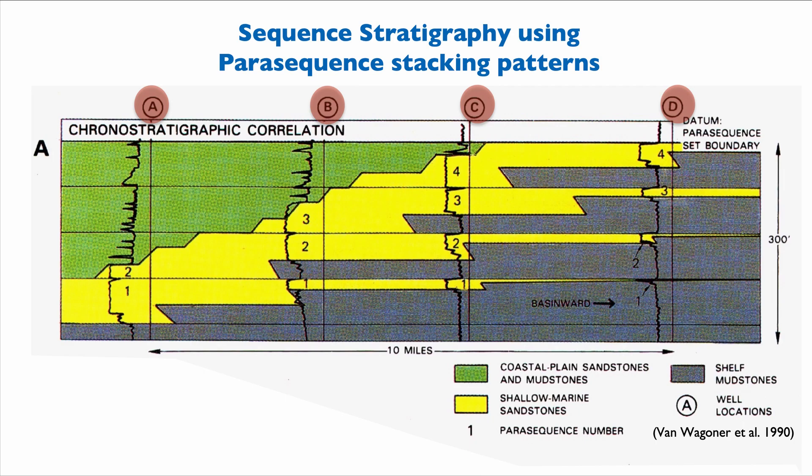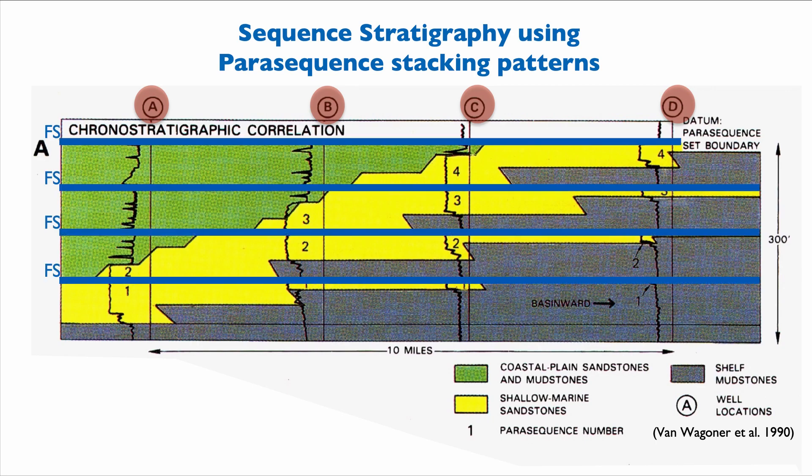If you use the parasequence set, you basically first determine what the age of your sediments are, and you recognize flooding surfaces. Because you have independent dating, you can correlate those flooding surfaces because you know that they are timelines. You obtain something like this, where in blue you have those flooding surfaces, the top of your parasequences, and by extension, you connect the sands together.